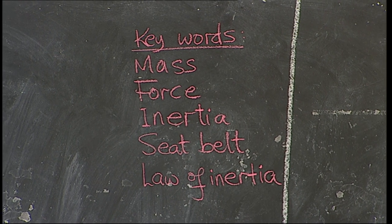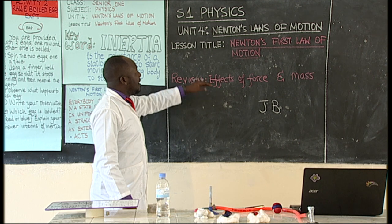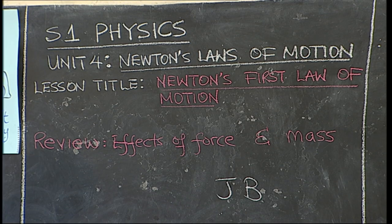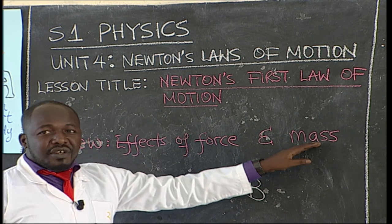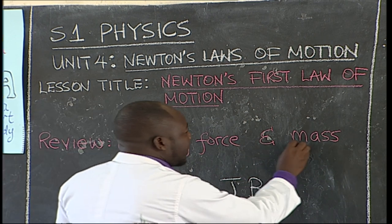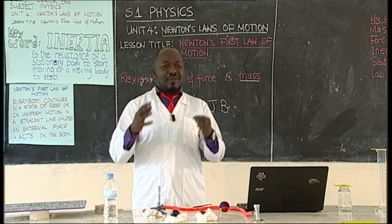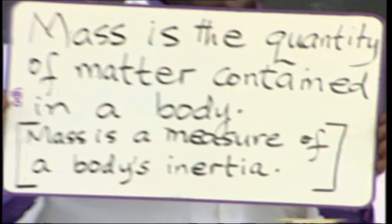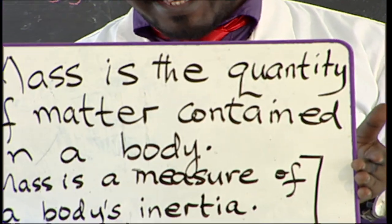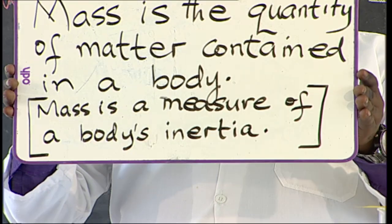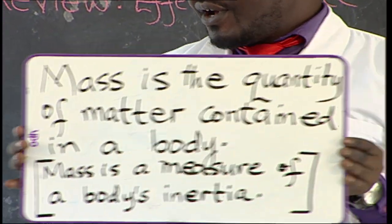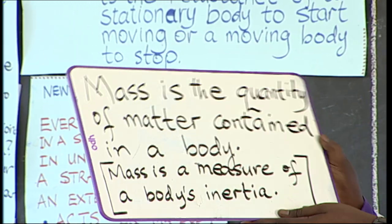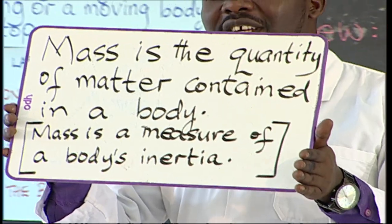Before we start, I want us to review what you learned in Units 1, 2, and 3, and perhaps from primary school — the effects of force and the meaning of mass. Mass is the quantity of matter that a body contains. Today we shall also see that mass may be defined as a measure of a body's inertia, which we shall relate to mass shortly.